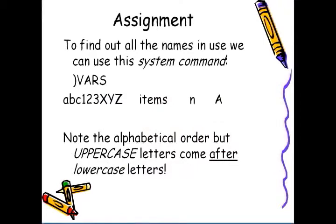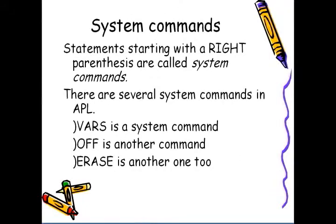To find all the names, we use what is called a system command. In this case, the system command )VARS will list all the variables that are in use at the time we issue the command. Any statement starting with a right parenthesis is called a system command. There are several system commands in APL. One of them, we've seen, is vars. It gives us the list of all the variables.